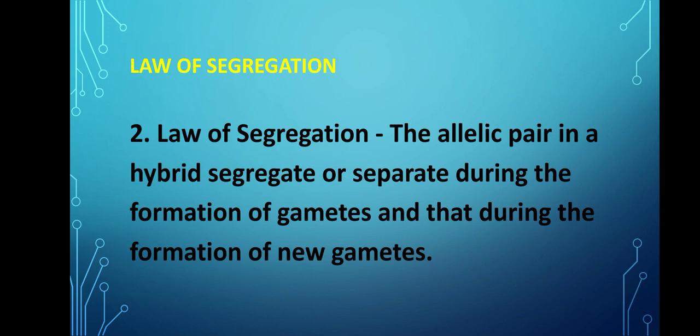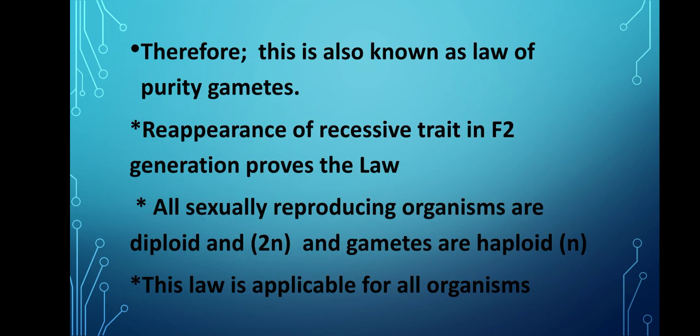Number two is the Law of Segregation. The allelic pair in a hybrid segregates or separates during the formation of gametes, and each gamete receives only one of the two factors and is pure for a given trait. Therefore, this is also known as the Law of Purity of Gametes. The reappearance of the recessive trait in the F2 generation proves this law. All sexually reproducing organisms are diploid, and gametes are haploid. This law is applicable for all organisms.